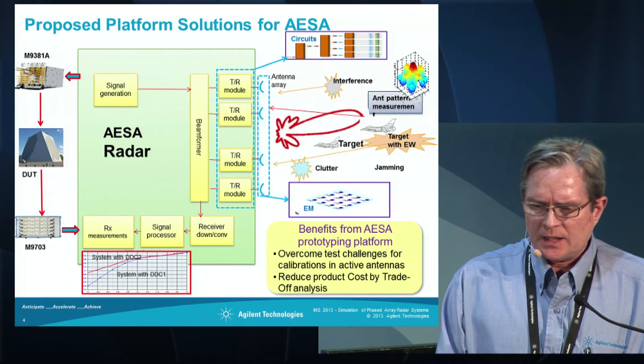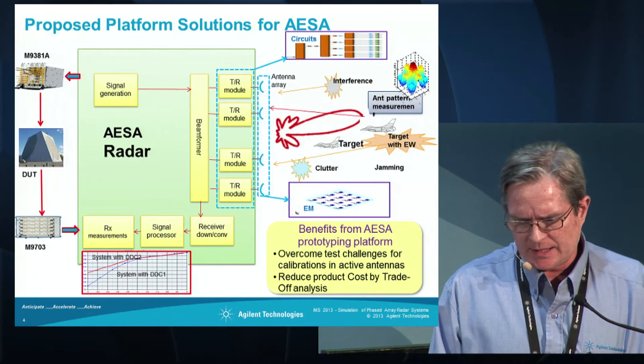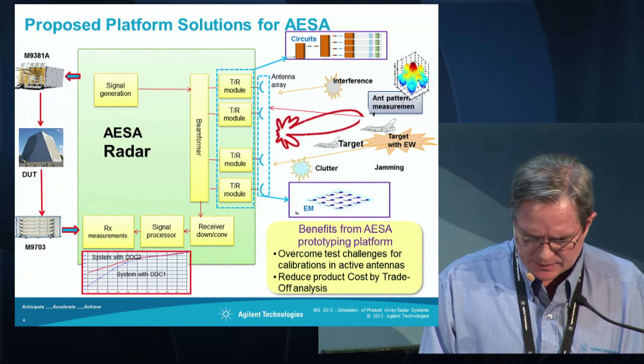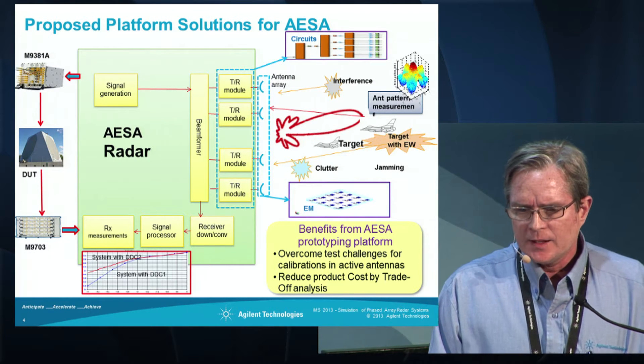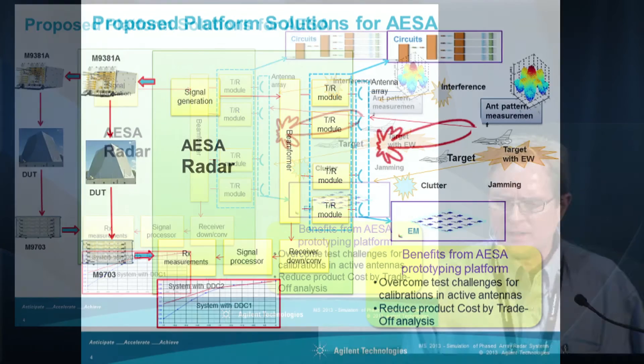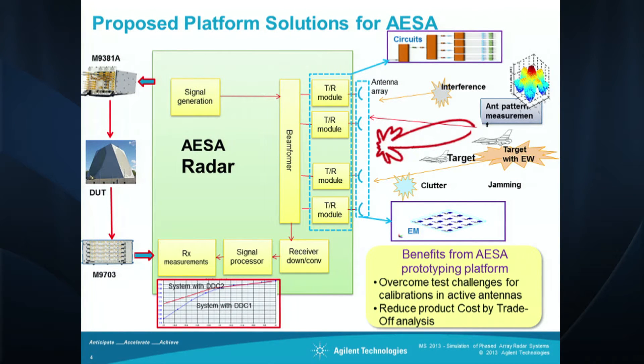We have a platform to bring all of this together for active electronically steerable antennas. The DUT is important, and test equipment and being able to measure it — but that's expensive. What you'd like to do is perform as much as possible in the simulator ahead of time. That includes algorithms for beam forming, down conversion, and breaking down large phased arrays into smaller subarrays, maybe doing some of the digital-to-analog conversion on those subarrays.